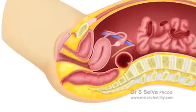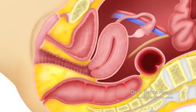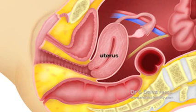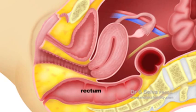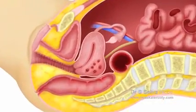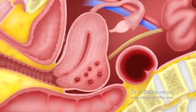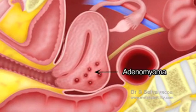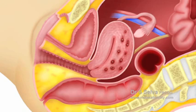This is a drawing of the normal female reproductive organs from a side view. This is the uterus. In front of the uterus is the urinary bladder and behind it is the rectum. Adenomyosis may involve only one part of the uterus focally. When this occurs, the nodule formed is called adenomyoma. Adenomyosis usually involves the back or posterior part of the uterus.